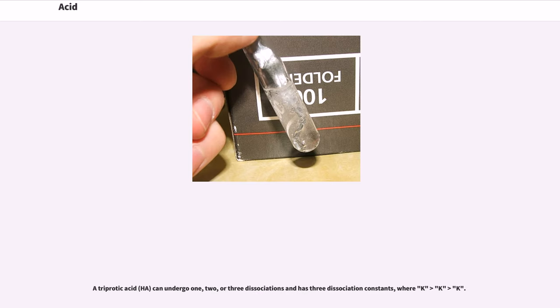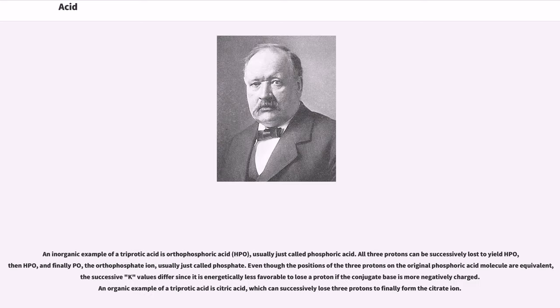A triprotic acid (H3A) can undergo one, two, or three dissociations and has three dissociation constants, where Ka1 > Ka2 > Ka3. An inorganic example of a triprotic acid is orthophosphoric acid (H3PO4), usually just called phosphoric acid. All three protons can be successively lost to yield H2PO4-, then HPO4^2-, and finally PO4^3- (the orthophosphate ion, usually just called phosphate). Even though the positions of the three protons on the original phosphoric acid molecule are equivalent, the successive Ka values differ since it is energetically less favorable to lose a proton if the conjugate base is more negatively charged.